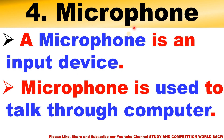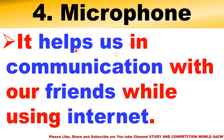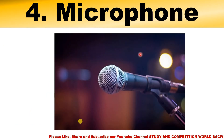Number four is microphone. A microphone is an input device. It is used to talk through the computer, to record voice, music, and sounds into the computer. It helps us communicate with our friends while using the internet. For example, if you want to call somebody on Zoom or any video call, you use a mic to talk to your friend.